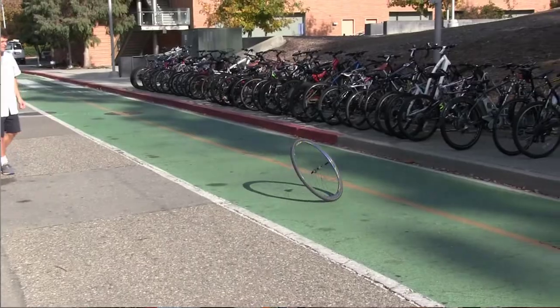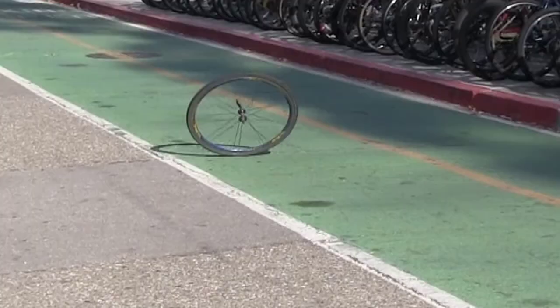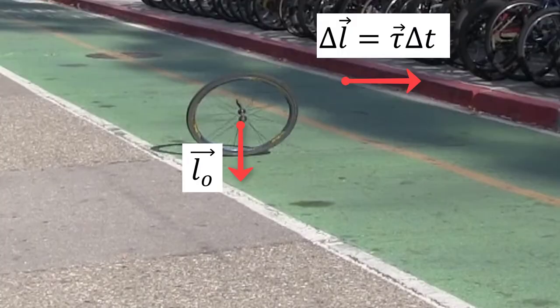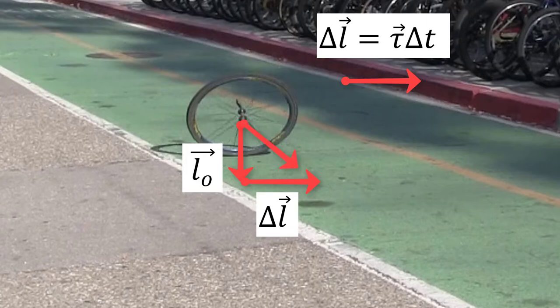You can also see this when we roll a wheel that is not vertical on the ground. The torque of gravity rotates the wheel into the turn.